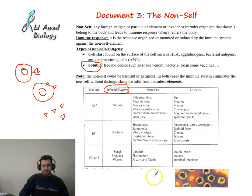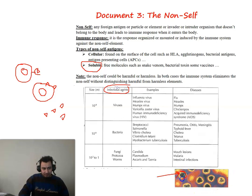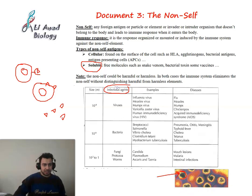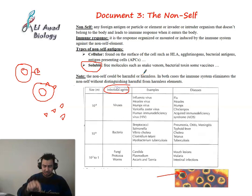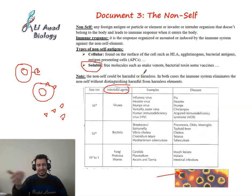Here you can see the influenza virus under the electron microscope, with its antigens visible. So that's everything about non-self in general. Microbes or microorganisms - the immune system doesn't distinguish between harmful or harmless particles, as evidenced by allergies: the immune system attacks non-self particles even if they are harmless.